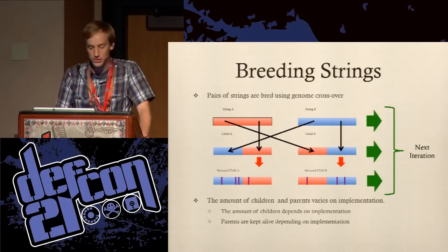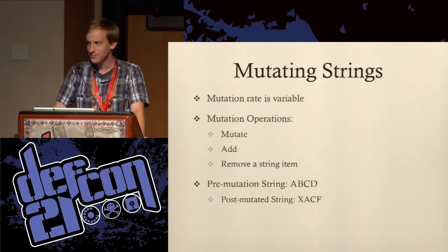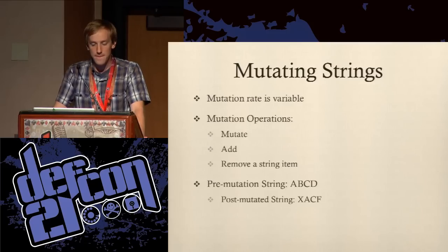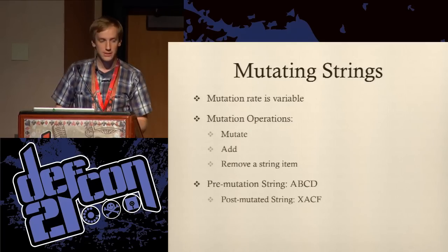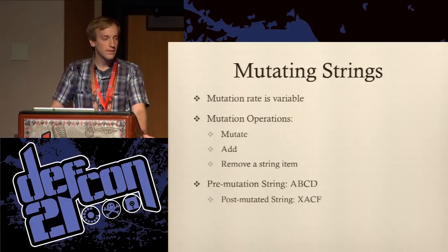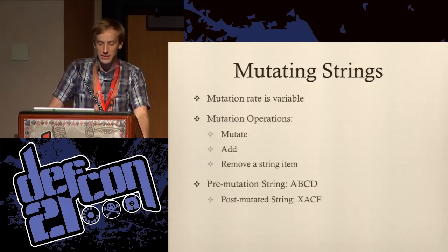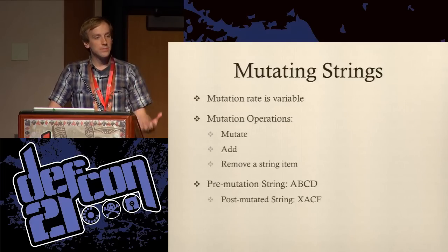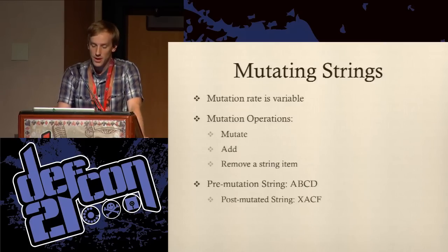What do we mean by mutating strings? The mutation rate is best to keep variable. There are a number of operations, but it all boils down to three essential ones: mutation — changing a single byte in the string; adding information; and removing information. It's somewhat like natural evolution. For example, given a pre-mutated string ABCD, mutations applied are: X is prepended, B is deleted, and D is mutated to F. We're just picking a random part of the string and changing it a little bit.